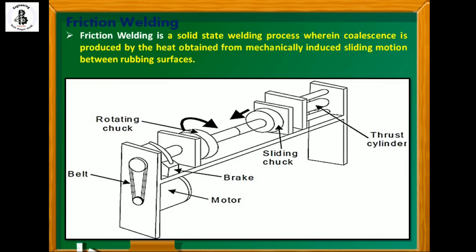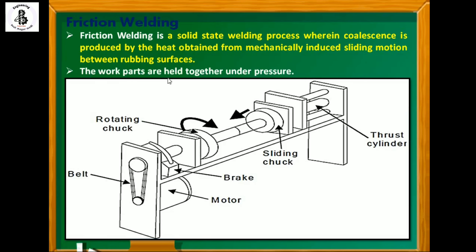Friction welding is a solid-state welding process wherein coalescence is produced by the heat obtained from mechanically induced sliding motion between rubbing surfaces — that is, the faces of both workpieces. The work parts are held together under pressure.